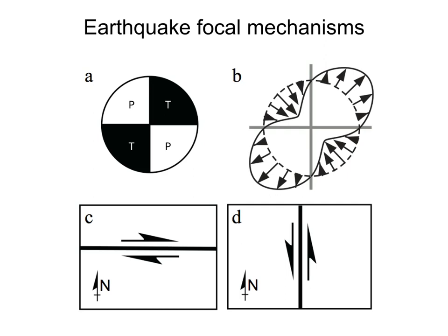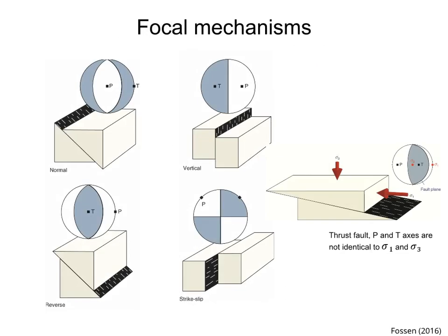If the fault strikes north-south, the fault is left-lateral, as shown in figure D. Any of these two cases, C or D, will generate extension along the northeast and southwest T quadrants.